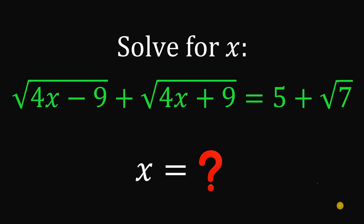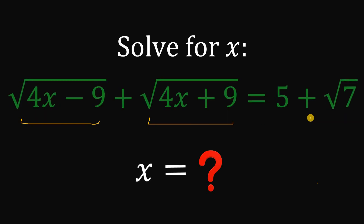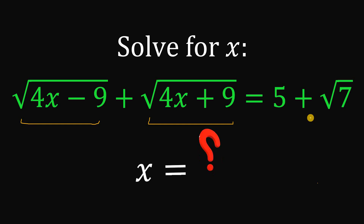Can you solve this math challenge? Here's the question. Solve for the real value of x that satisfies this equation: square root of 4x minus 9 plus square root of 4x plus 9 equals 5 plus square root of 7. You can pause this video if you want to give this problem a try.